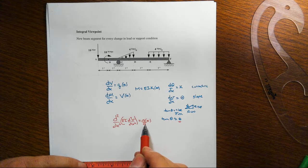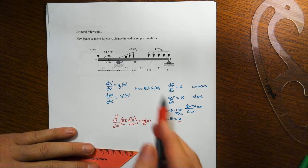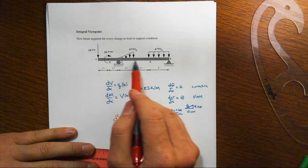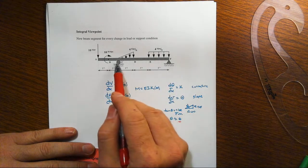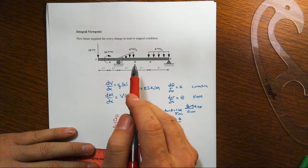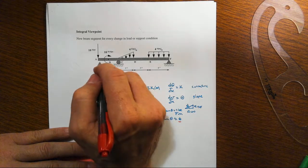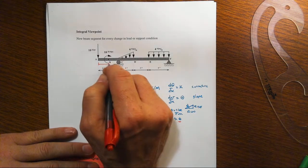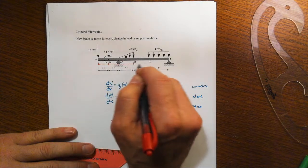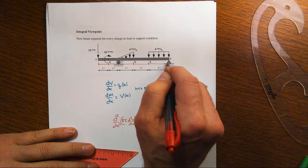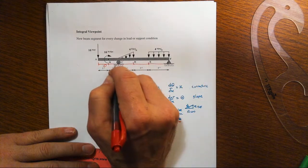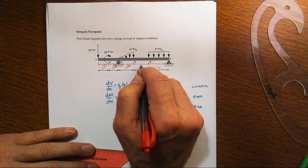And that means for something like this simple supported beam - pin support here, roller support there - that we have one, two, three, four, five different beam segments.